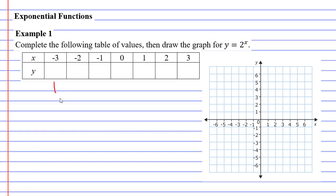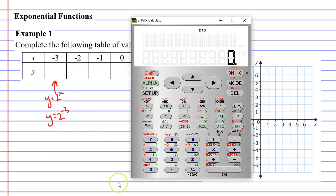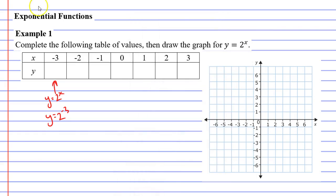So we'll start with the first column here where x is negative 3 and we'll substitute that into our equation y equals 2 to the power of x. This gives us y equals 2 to the power of negative 3. So we'll bring up our calculator here. 2 yx meaning power. So 2 to the power of negative 3 gives us 0.125. So we'll write that down. 0.125.